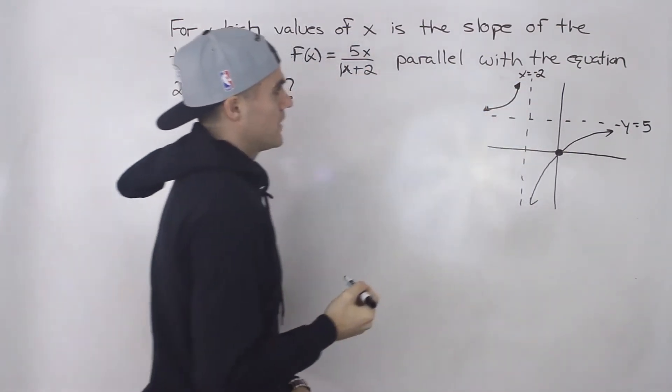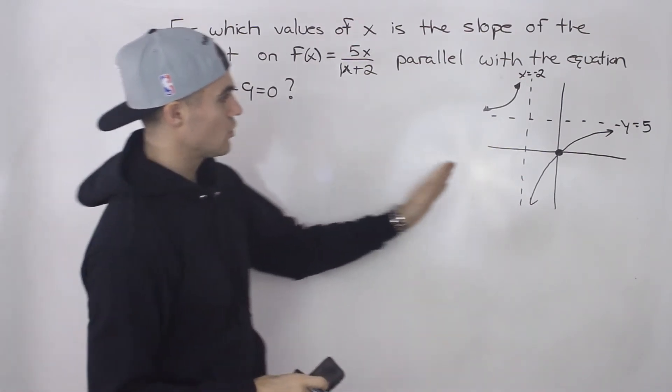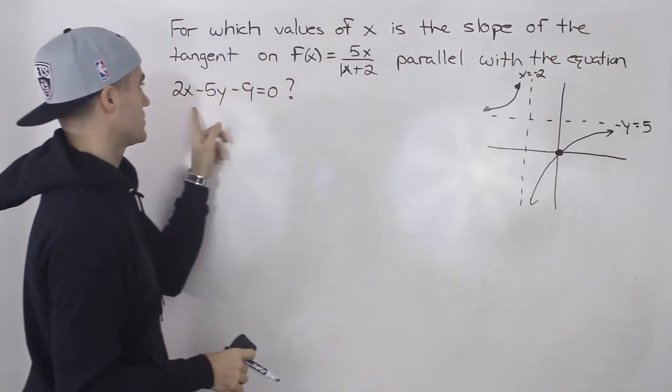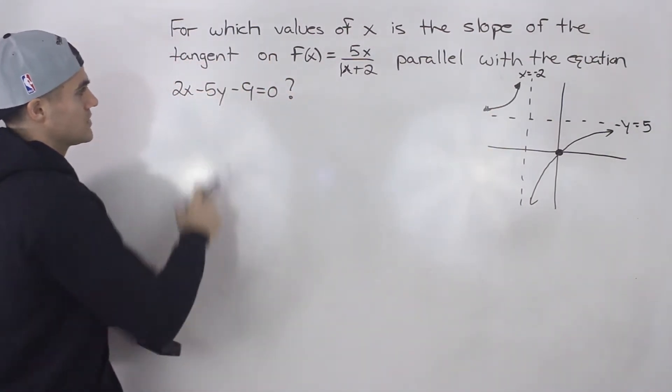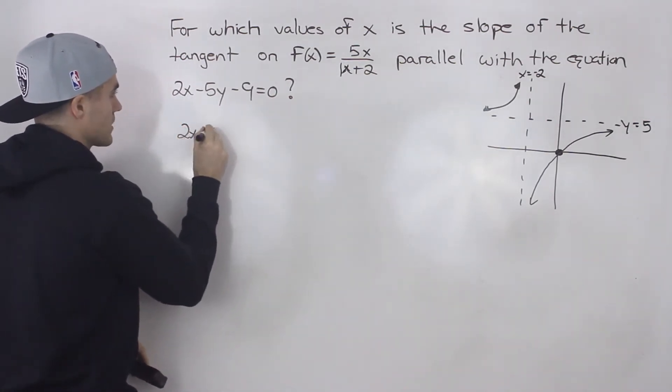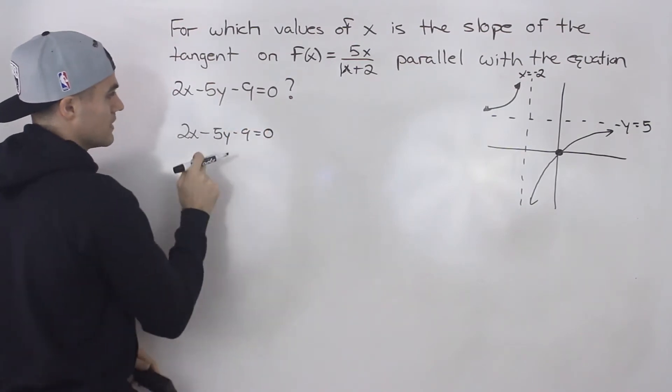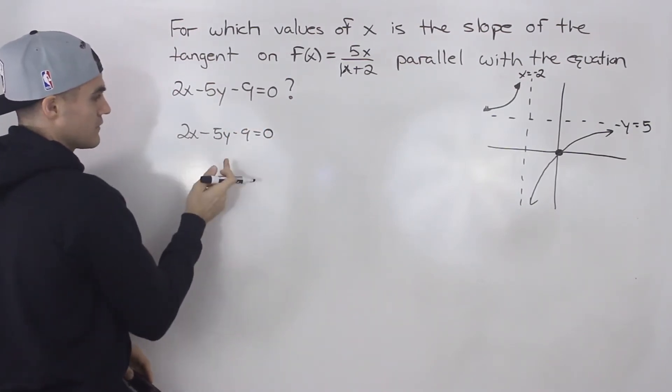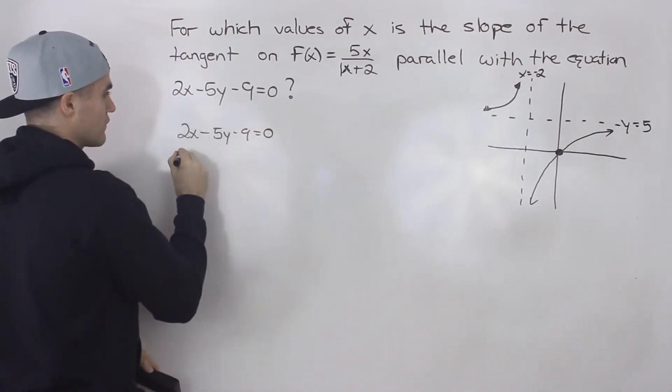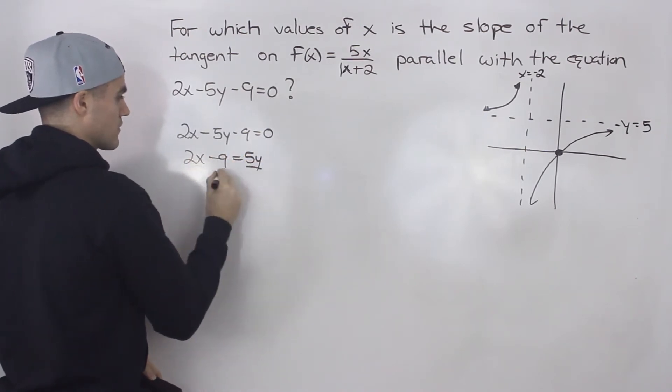And now we have to find what values of x is the slope of the tangent on this function going to be parallel to this equation here. And notice how this is a line. So if we rewrite this, we got 2x minus 5y minus 9 equals 0. If we isolate for y, we're going to put this line into y equals mx plus b form. So bring the negative 5y over.